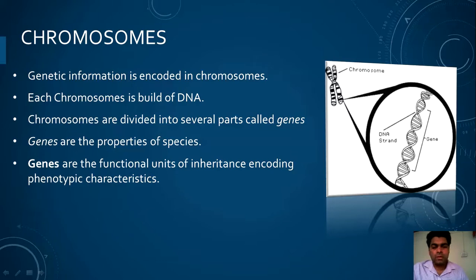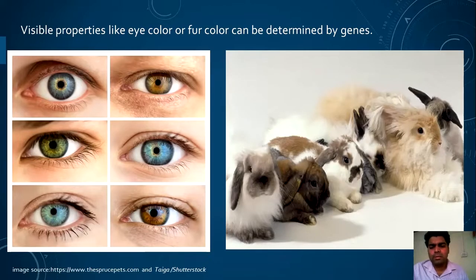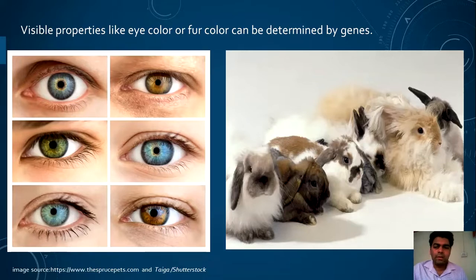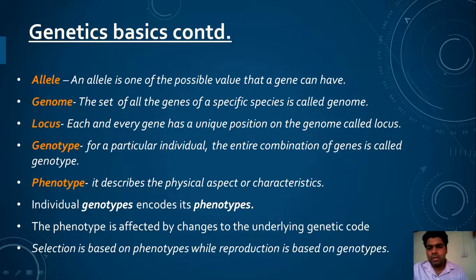The natural selection process determines which individuals can survive, and that is decided by phenotypic characteristics — whose functional unit is a gene. For example, our eye color is different from one individual to another — this is determined by genes. Similarly, the fur color of rabbits and cats differs. Basically, any property of a species or individual is encoded by a gene.